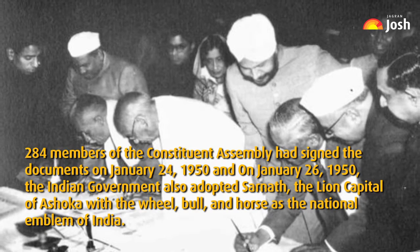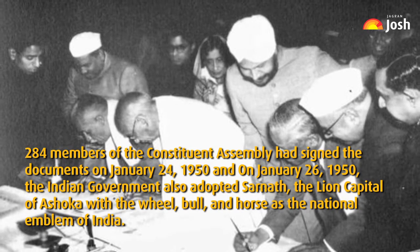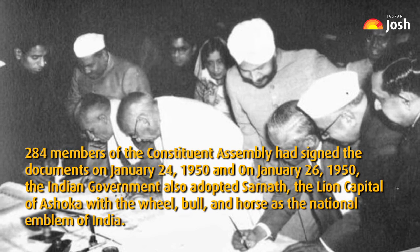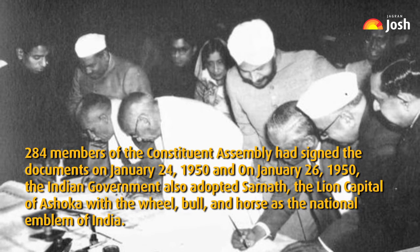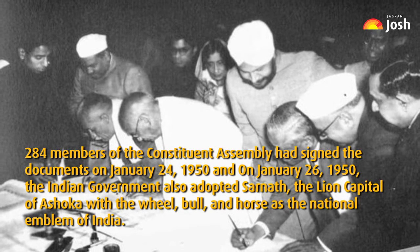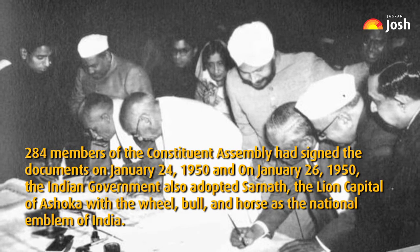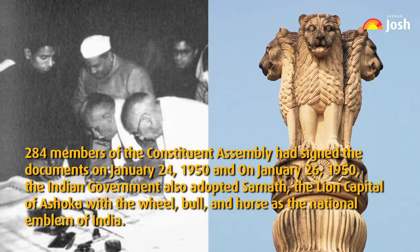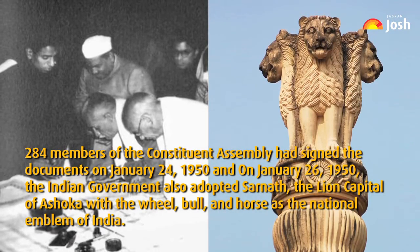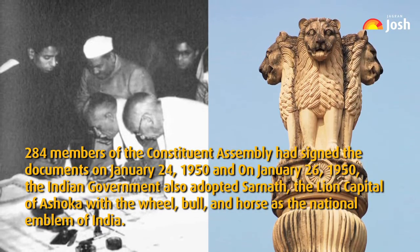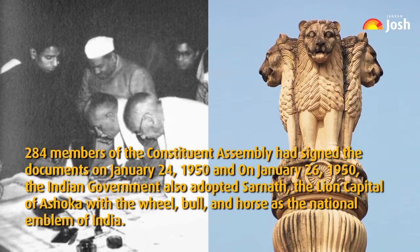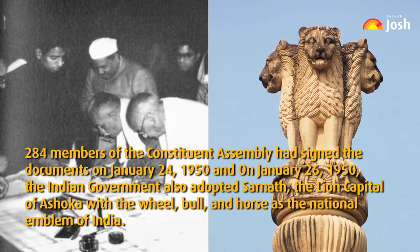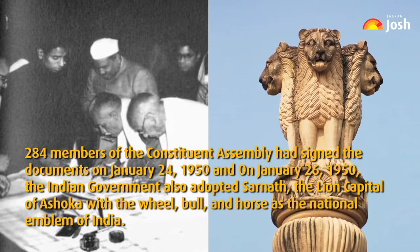284 members of the Constituent Assembly had signed the documents on January 24, 1950. On January 26, 1950, the Indian government also adopted Sarnath, the lion capital of Ashoka, with the wheel, bull, and horse as the national emblem of India.